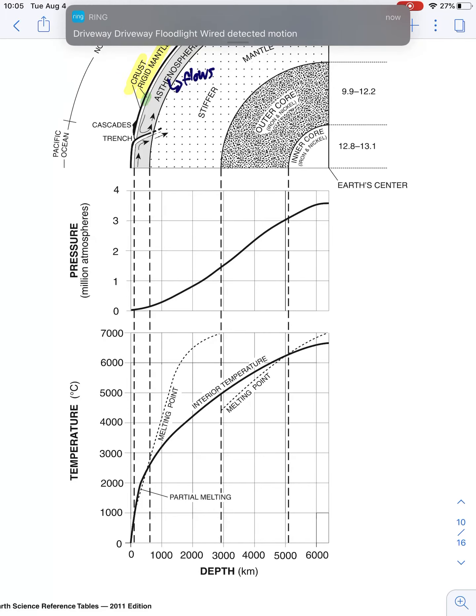Sometimes they'll ask you a combo question. They'll say, when the pressure is 2.5 million atmospheres, what is the temperature? Well, 2.5 million atmospheres is right here. I go down to my temperature. I go across. It's about 5,700 degrees Celsius. So there's different things that they could ask you.